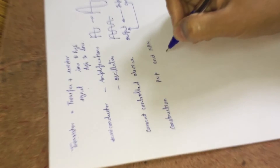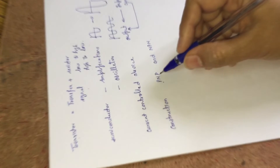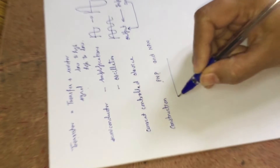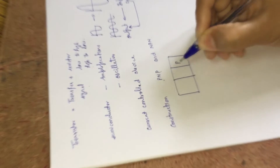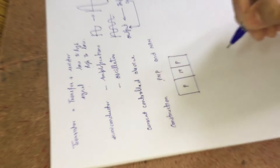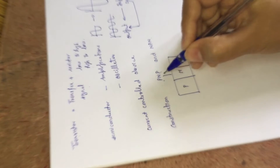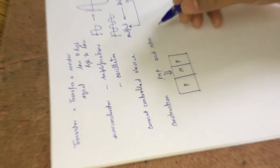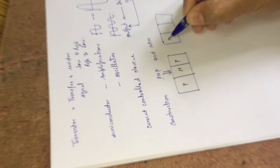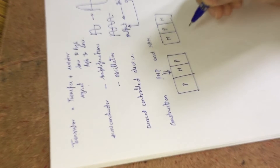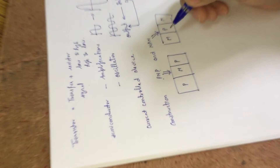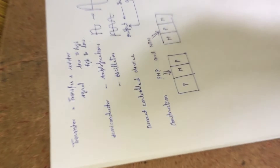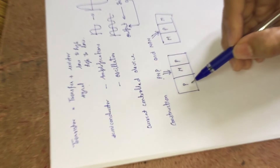On the basis of construction, a transistor is of two types: one is known as PNP transistor and another is known as NPN transistor. In the case of PNP transistor, two P-type semiconductors sandwich an N-type semiconductor in between them. Similarly, in an NPN transistor, two N-type semiconductors have a P-type semiconductor sandwiched in between them.